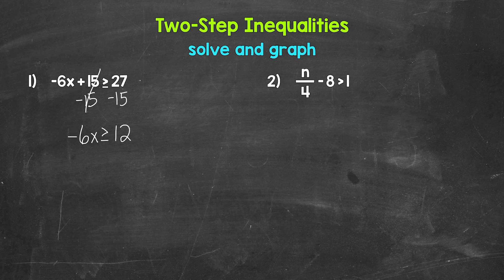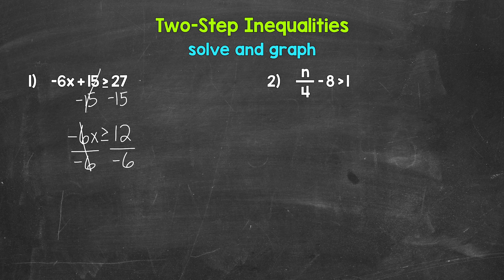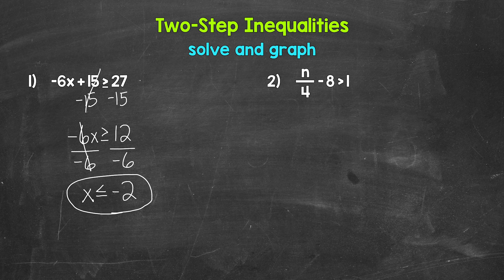27 minus 15 gives us 12, so now we have negative six X is greater than or equal to 12. X is being multiplied by negative six, so we need the inverse operation — division. Divide both sides by negative six. Remember, when we divide both sides of an inequality by a negative, the inequality symbol flips direction. The negative sixes cancel, X is now isolated, the symbol flips, and 12 divided by negative six gives us negative two. So our final answer: X is less than or equal to negative two.